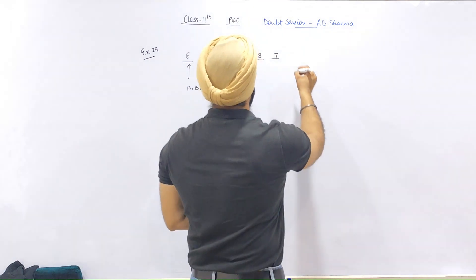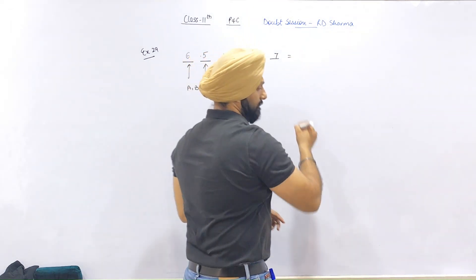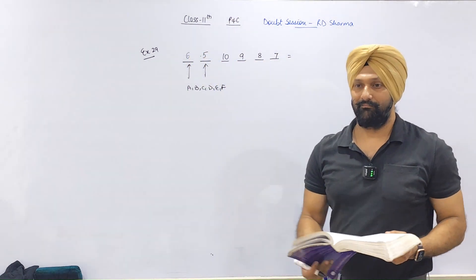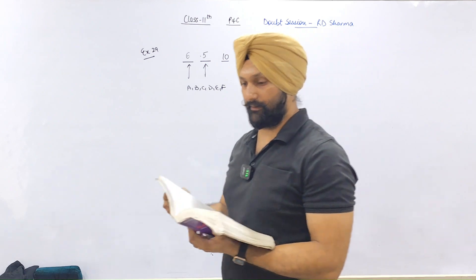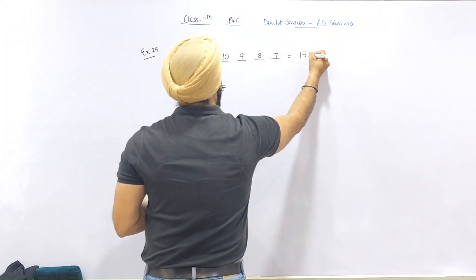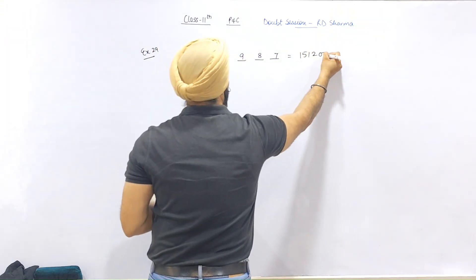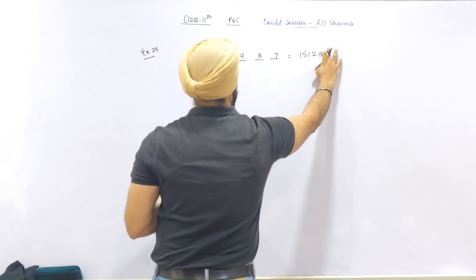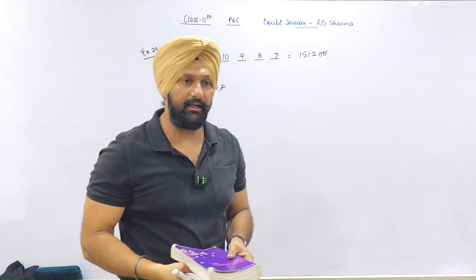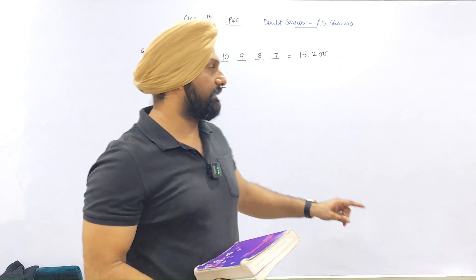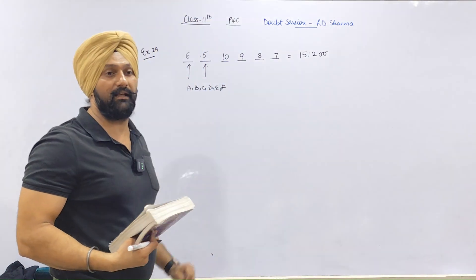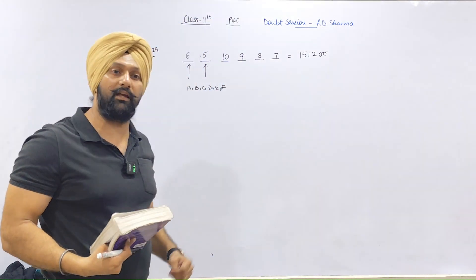Now multiply all of them together. Let's cross-check the answer — the answer is 1512. We have 6 letters, and continuing the logic with 6 numbers, we get 26 and so on.